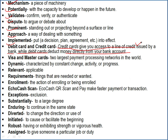Credit cards have a fixed amount available. Visa and MasterCard are the two largest payment processing networks in the world. Dynamic: characterized by constant change, activity and progress. Applicable: requirements needed. Enrollment: direction of being enrolled. Eco-cash scan: a sort of scan and pay. Exceptions: exclusions. Substantially: to a large degree. Enduring: to continue in the same state. Diverted: to change the direction. Initiated: to cause or facilitate. Robust: having or exhibiting strength or vigorous health. Assigned: to give someone a particular job or duty.